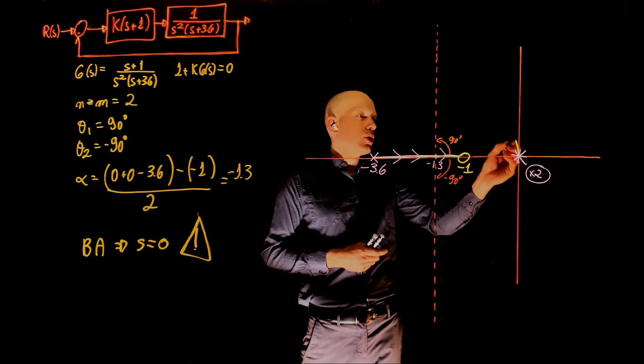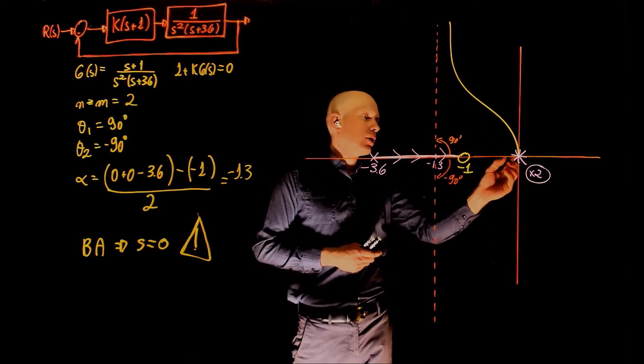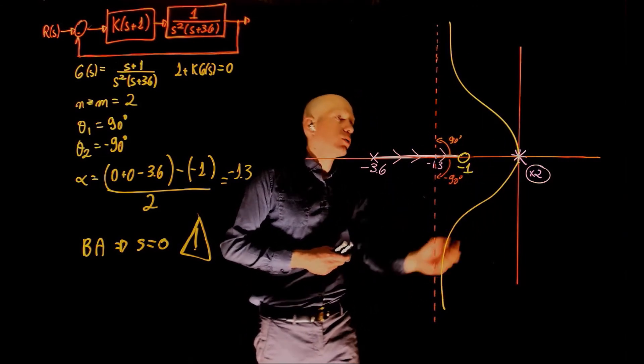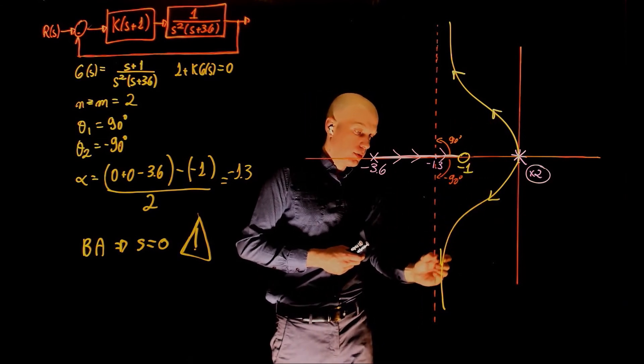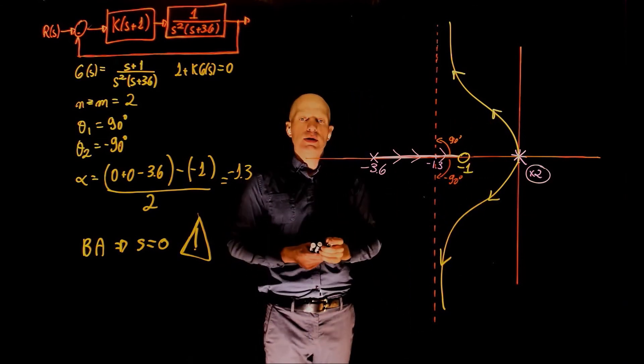So the solution is now that one goes up, the one goes downwards. And this now completes the root locus of this system.